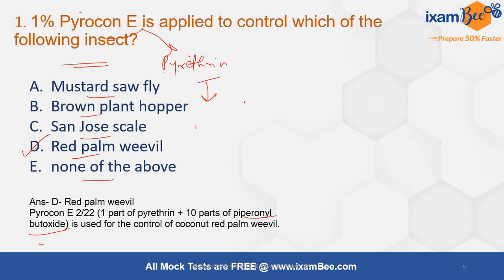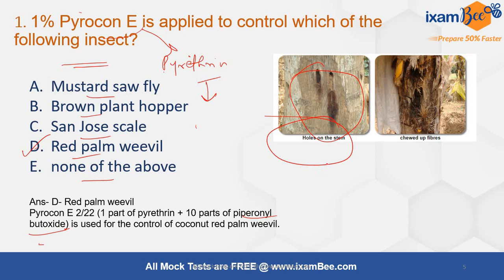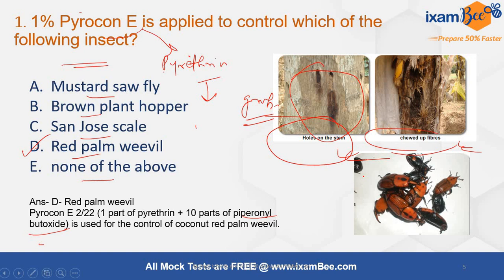The red palm weevil creates shot holes on the stem of the coconut tree, and this is mainly done by the grub stage. There are chewed-up fibres protruding out from the stem. This is the adult of the red palm weevil.